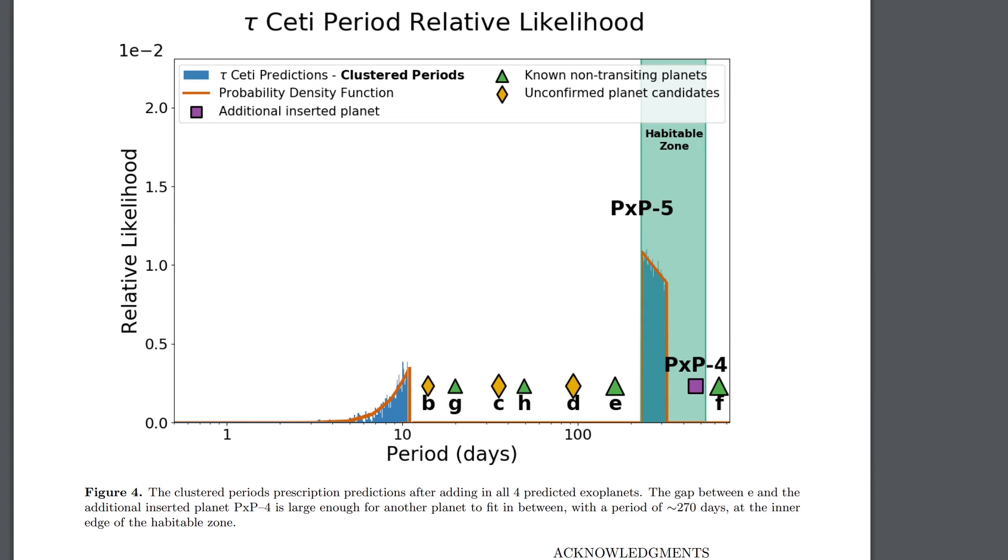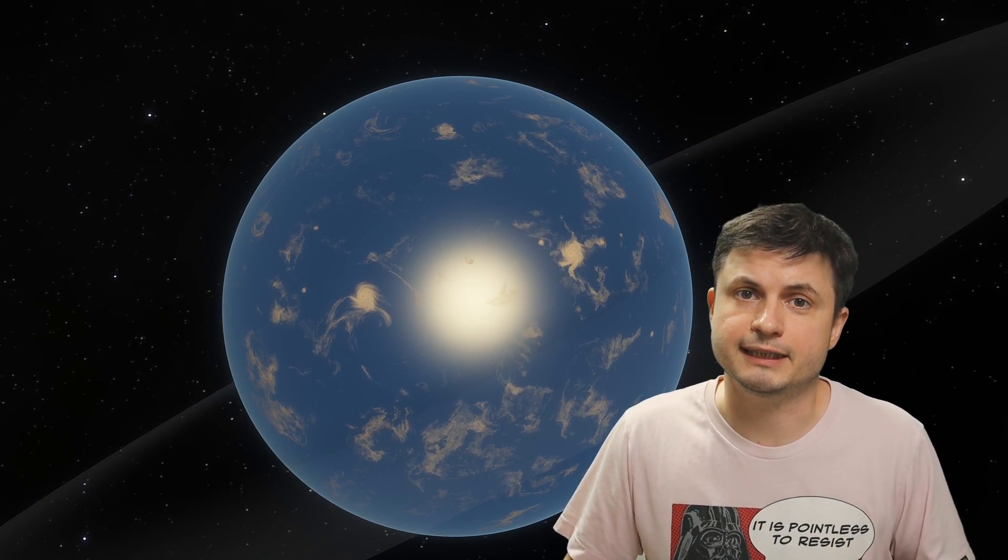And interestingly at least one of these suggested planets seems to be in the habitable zone of Tau Ceti. And so it's really interesting to kind of explore this system once again, just to find out what we've learned about it in the last few years.